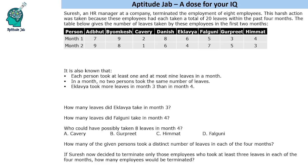Hello everyone, welcome to Aptitude Jab. This set says that Suresh, an HR manager at a company, terminated the employment of 8 employees. This harsh action was taken because these employees had each taken a total of 20 leaves within the past 4 months. The table below gives the number of leaves taken by these employees in the first 2 months. We will have to find month 3 and month 4 based on these numbers and then answer the questions.